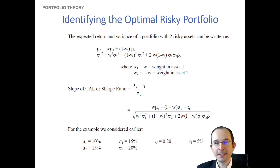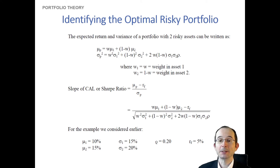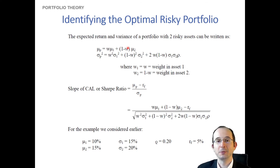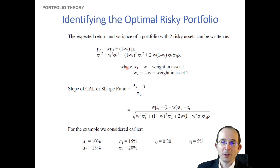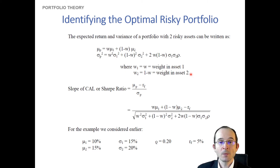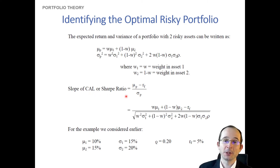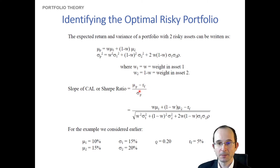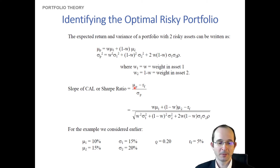Now, can we actually identify what the optimal risky portfolio would be? To build intuition, let's go through a simple two-asset case. The expected return and variance for a portfolio with two risky assets are given by the standard formulas. We just need one weight, since if we know the weight on asset one, that tells us the weight on asset two. The Sharpe ratio is the ratio of the risk premium relative to the risk-free rate over the portfolio's standard deviation.